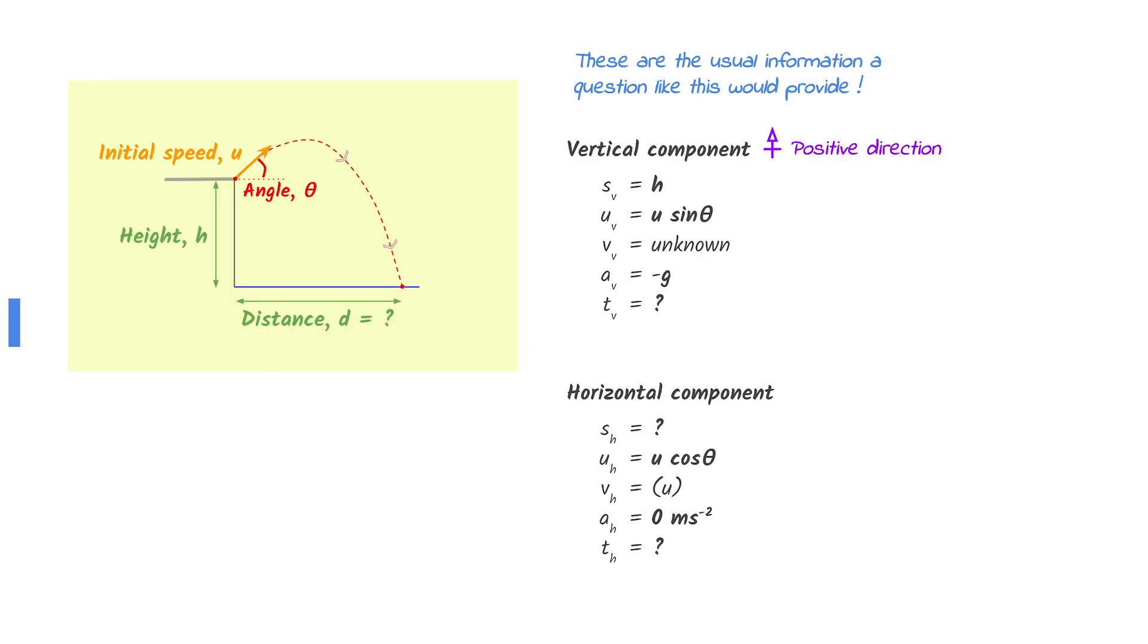Time to know why. An object is thrown from a cliff at an angle to the horizontal. The information that a typical question provides to find the horizontal distance is shown on the right.